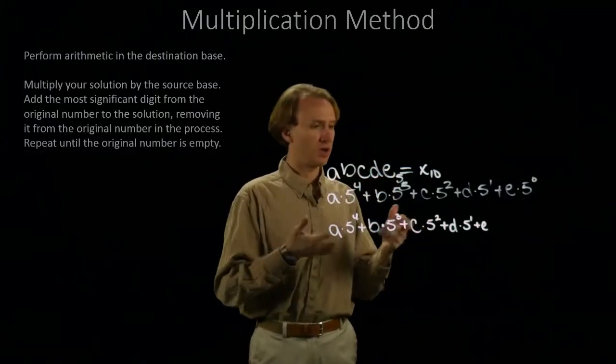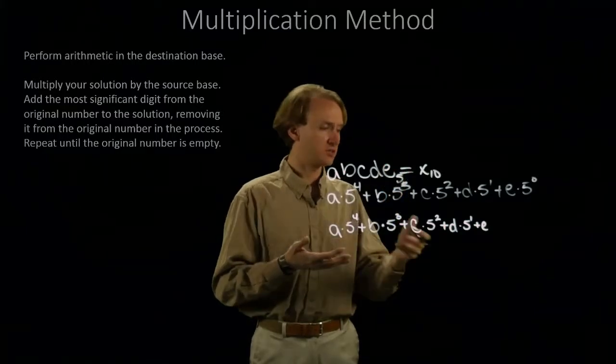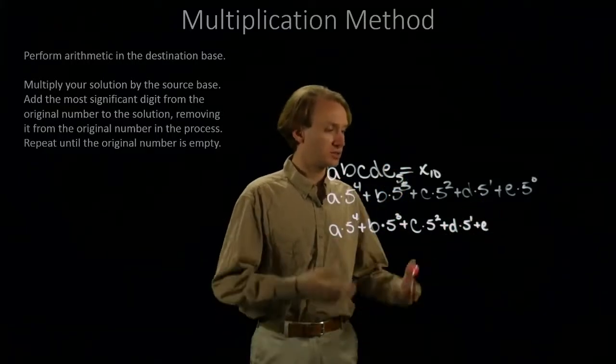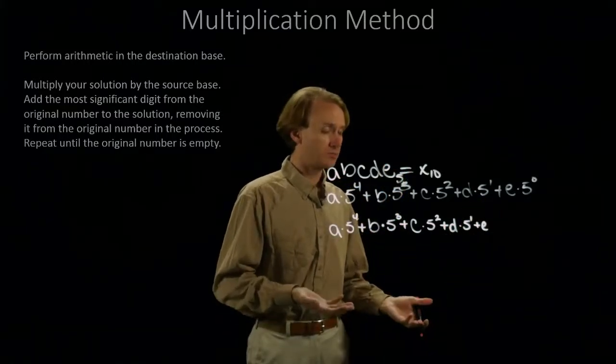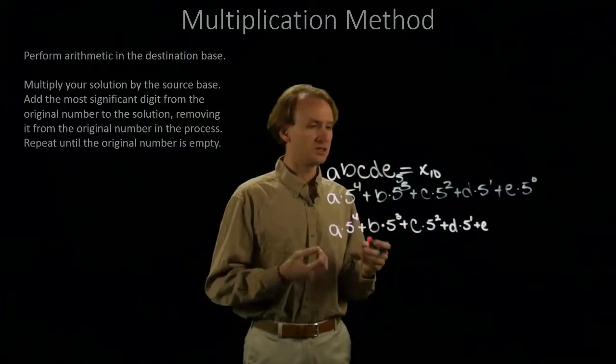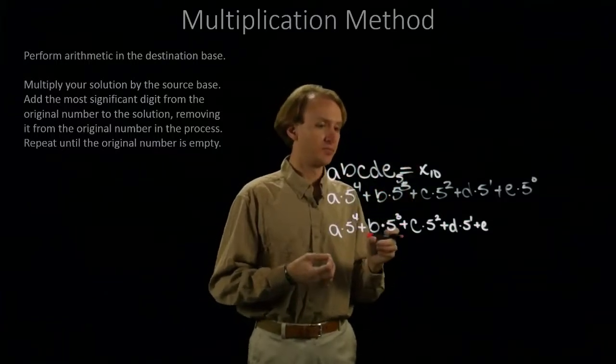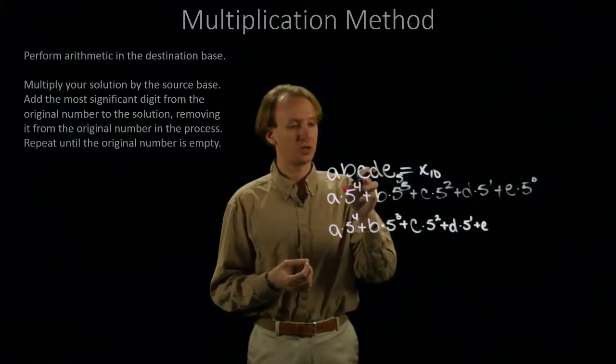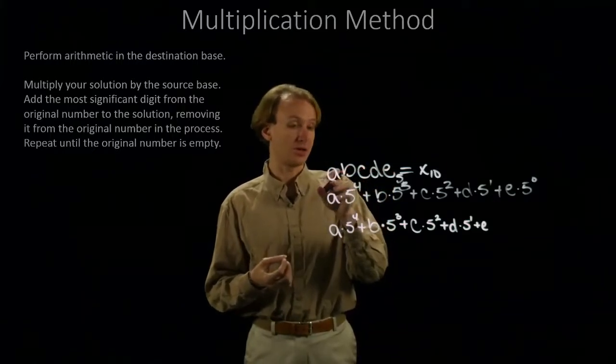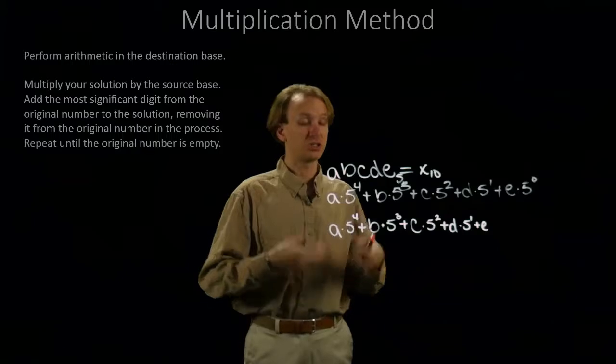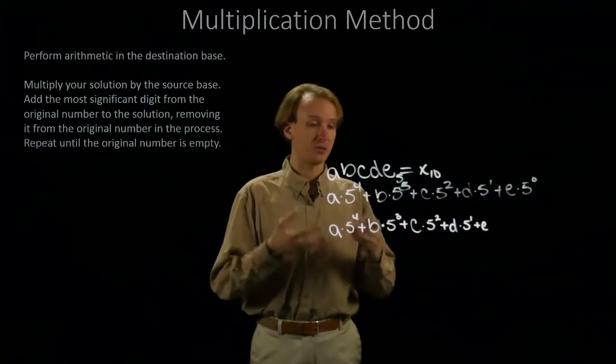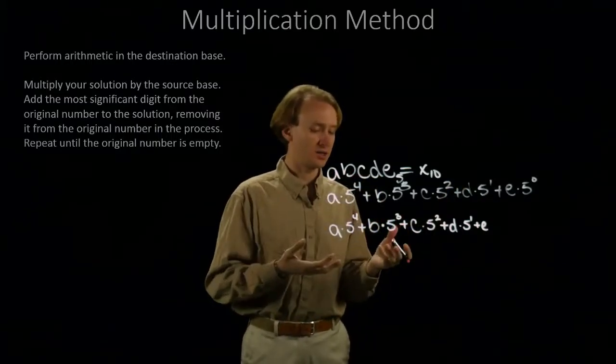Base one gets multiplied by 5 to the zero, so that doesn't involve multiplying by 5 at all. But all of these others needed to be multiplied by some number of this base. One here, two here, three here, four here. And we just did that iteratively rather than simply writing them down and calculating it.